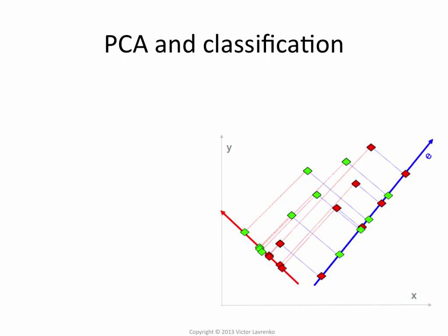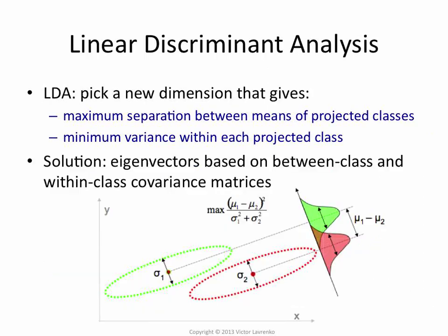A student asks: if it's a training set, could you use the class label with PCA — make a two-dimensional problem and then run PCA? The instructor responds: turning it into three dimensions won't work. However, there is a technique that looks pretty much identical to PCA that tries to do exactly that — take advantage of class labels. This is Linear Discriminant Analysis, or LDA. The basic idea is that while PCA looks for the dimension of the greatest variance, LDA looks for a dimension such that when you project to it, you maximize the difference between the means of the classes normalized by their variances.